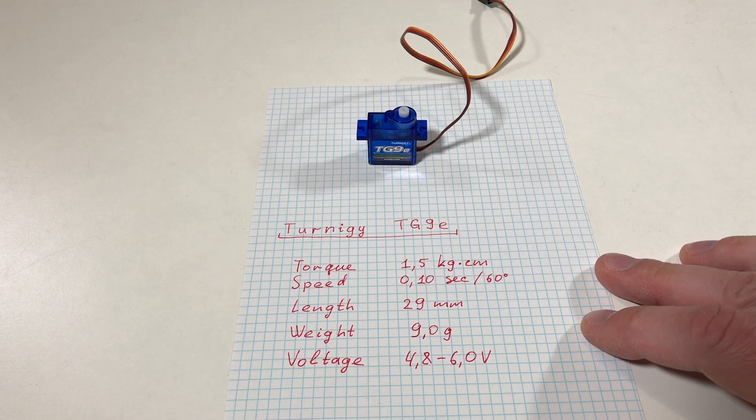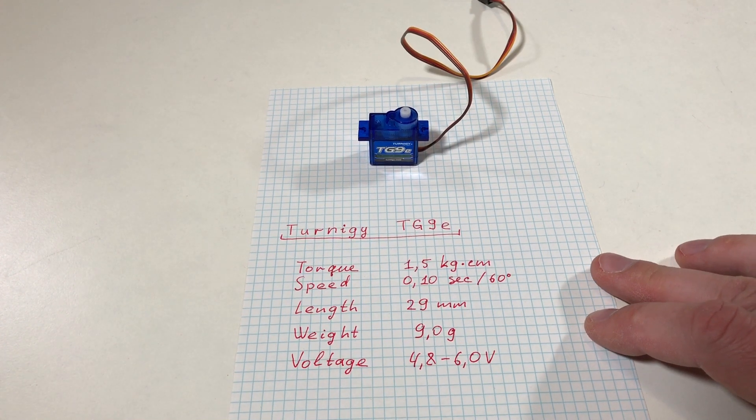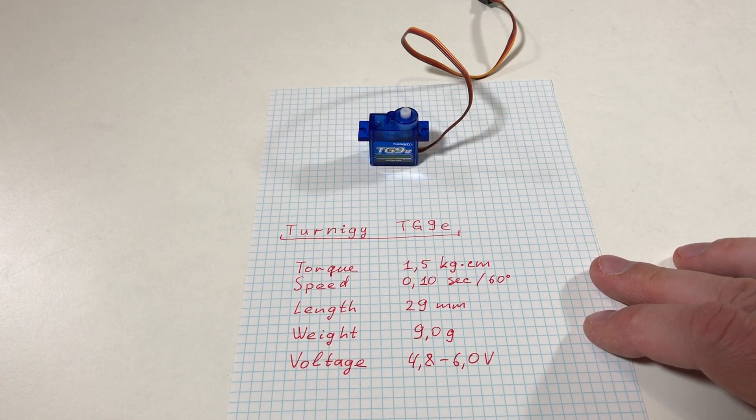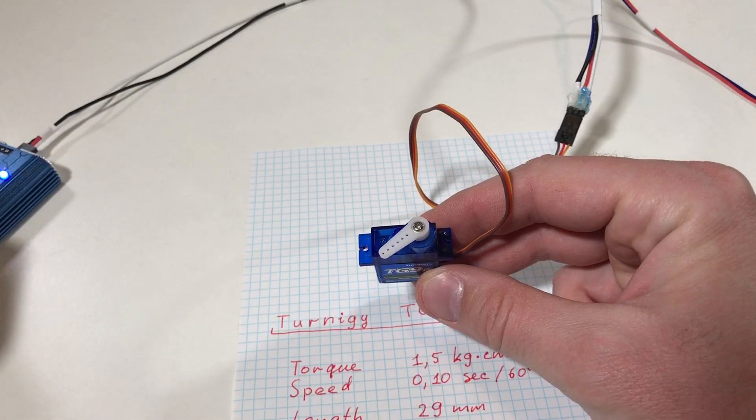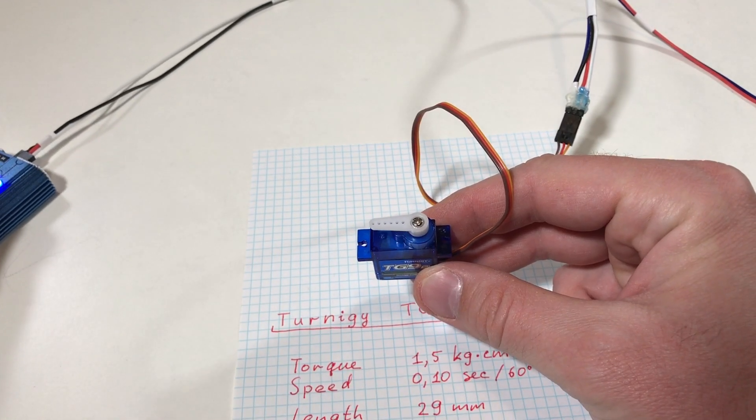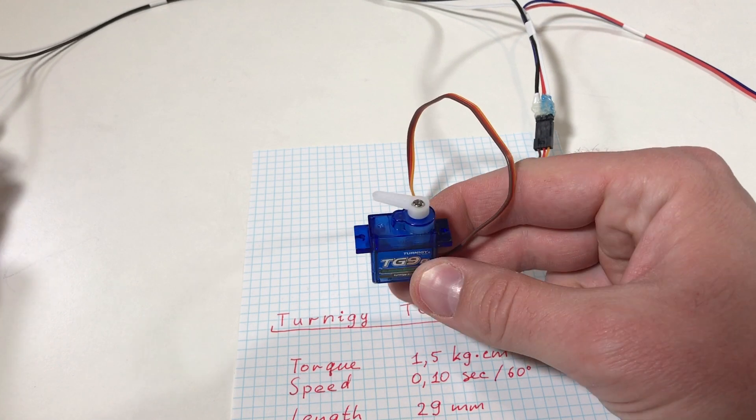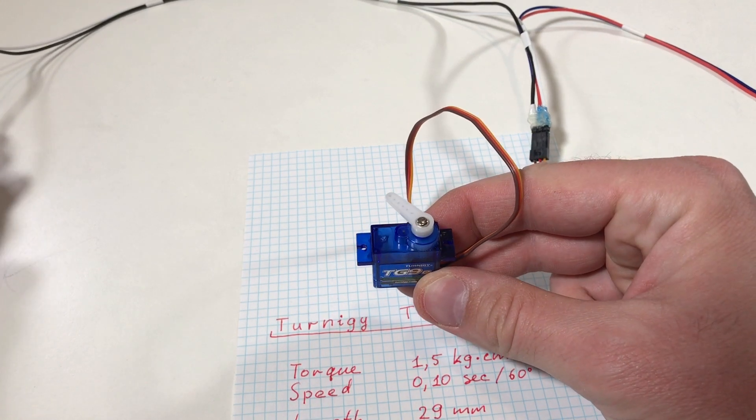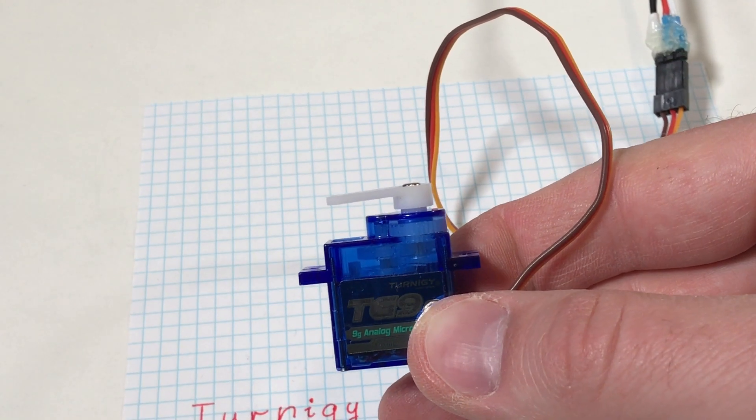The next servo is a little bit bigger, a little bit more powerful, but nothing very interesting. Let's do the test very quickly. It's connected now. It makes a little bit strange sounds but it works. You can see the gears.